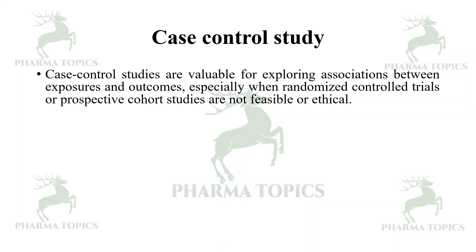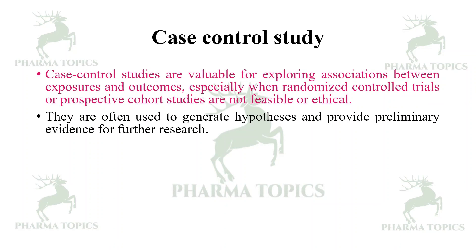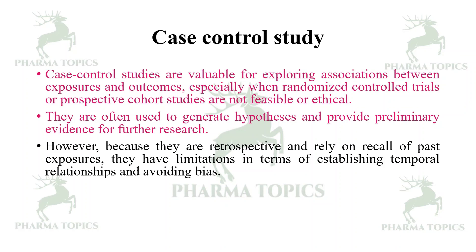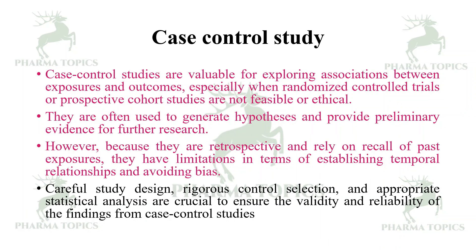Case control studies are valuable for exploring associations between exposures and outcomes, especially when randomized control trials or prospective cohort studies are not feasible or ethical. They are often used to generate hypotheses and provide preliminary evidence for further research. However, because they are retrospective and rely on recall of past exposures, they have limitations in establishing temporal relationships and avoiding bias. Careful study design, rigorous control selection, and appropriate statistical analysis are crucial to ensure validity and reliability.